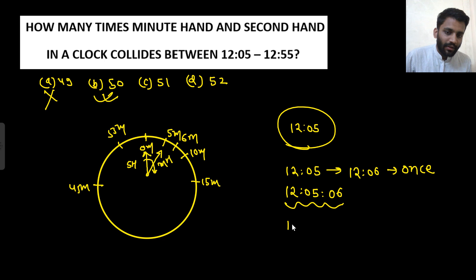From 12:06 to 12:07, what will happen? At 12:06, the minute hand is at 6 minutes and second hand is at 12. Now it will move again and strike somewhere at 12 hours 6 minutes and some seconds. Between 12:06 and 12:07 it will collide once.